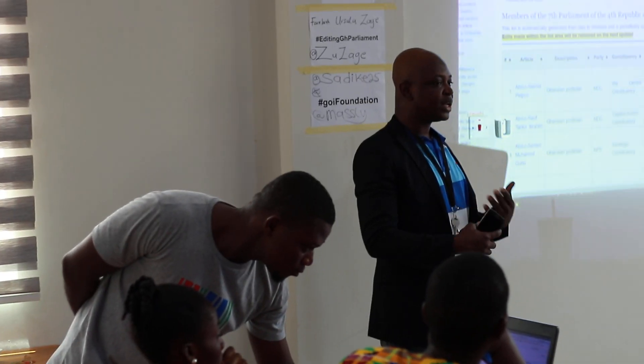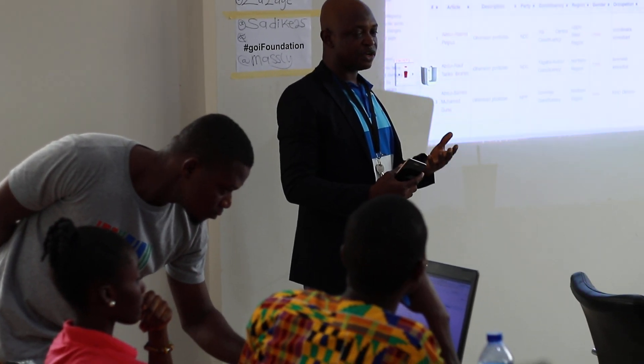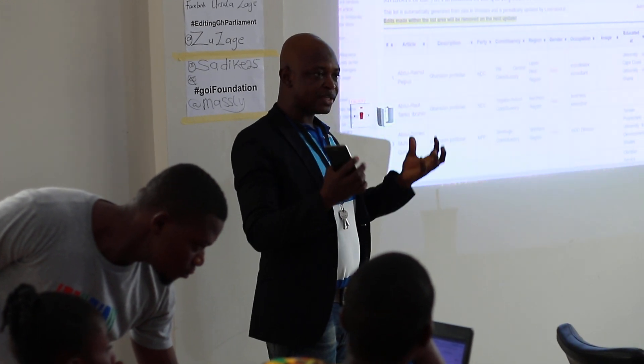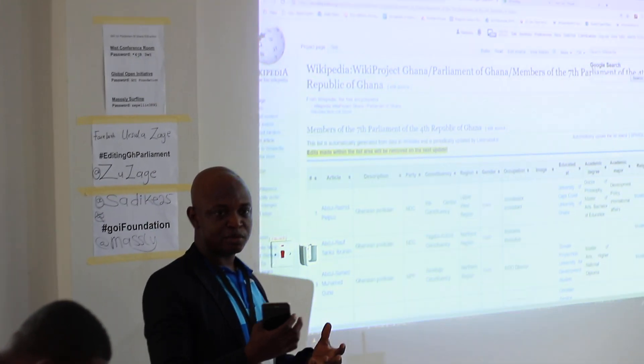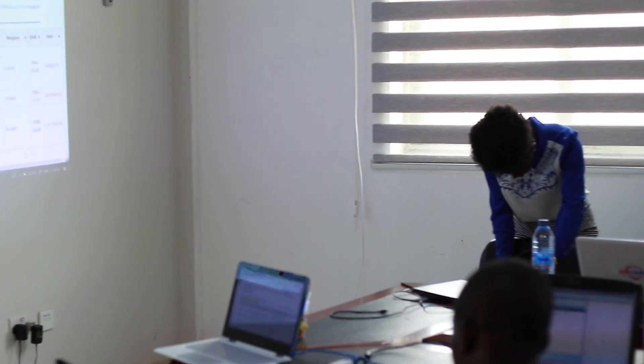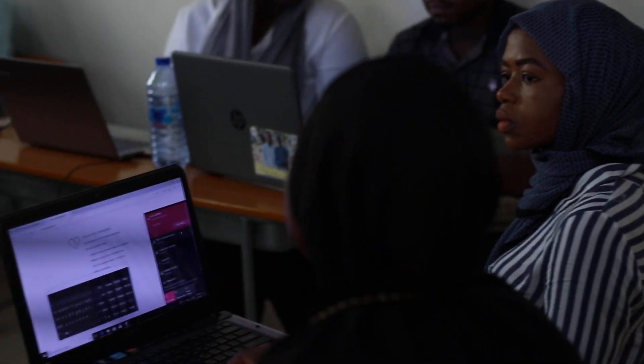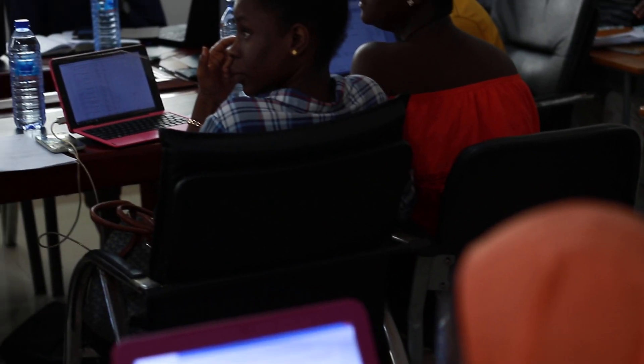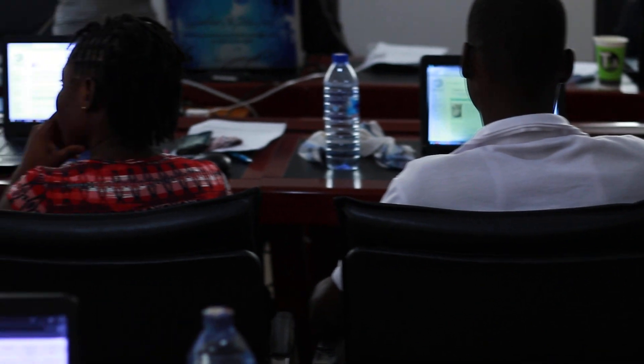AI crawls the internet to search for information and then creates that information in a way that is presentable to read. So the developers came up with this idea: why don't we convert Wikipedia into a form of structured data? Because if you have structured data, it's easy to query. If you have data that is just in text form, it's very difficult.